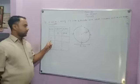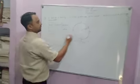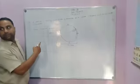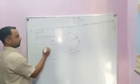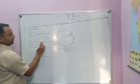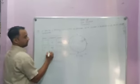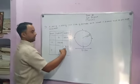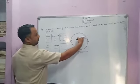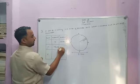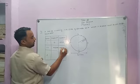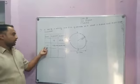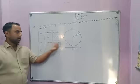For 1.5 revolutions, what is the displacement? The displacement is 2r, which equals the diameter. What is the distance? The distance is 1.5 times 2πr, which equals 2πr plus πr, giving a total distance of 3πr covered by the particle in 1.5 revolutions.